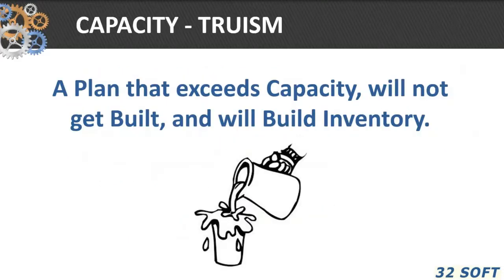There's an old axiom in the world of APICS: a plan that exceeds capacity will not get built and will build inventory. In other words, you could do the best job of scheduling and setting priorities in your manufacturing process, but if you don't understand and provide for adequate capacity, all is for naught. So we're going to talk about capacity.